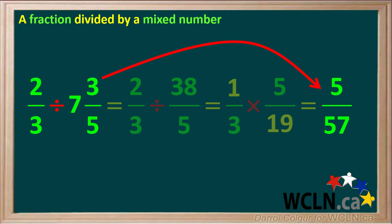5/57 is a proper fraction, so we cannot change it to a mixed number. Also, it can't be reduced to simpler terms.